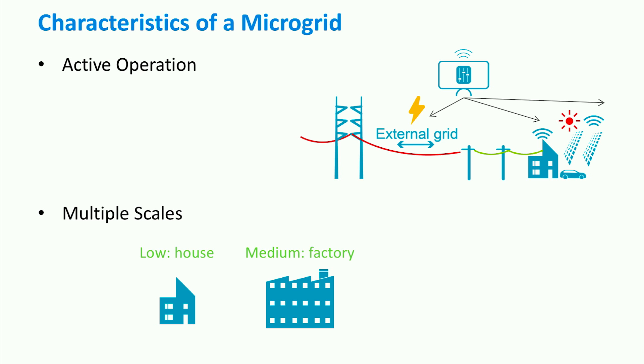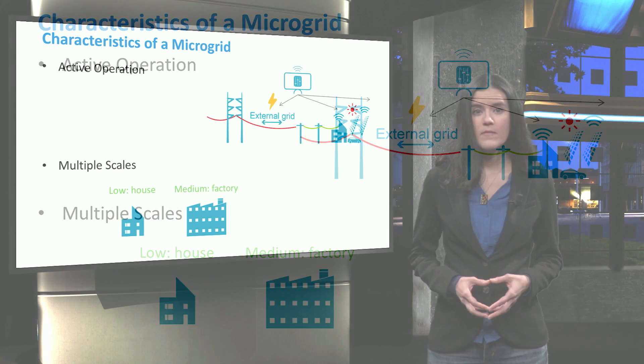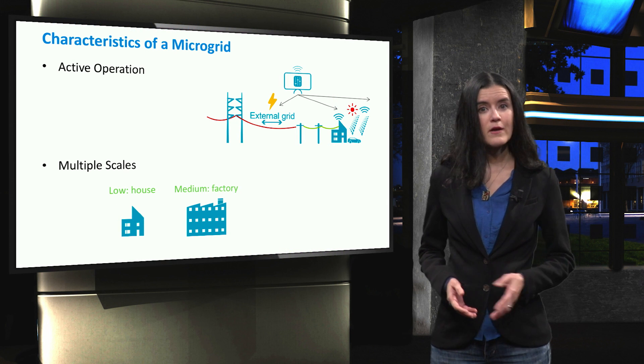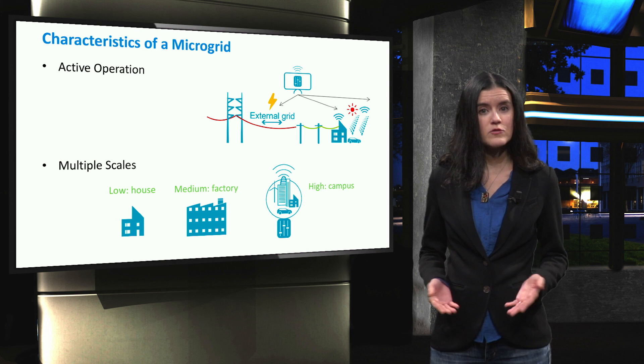A medium scale microgrid could be a factory. An example of a bigger scale microgrid can be a university campus or a neighborhood.